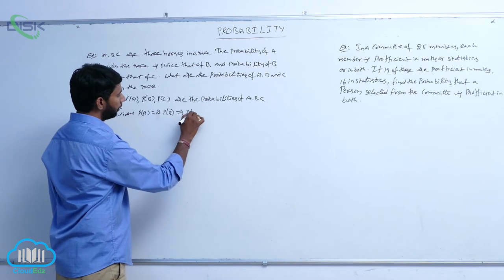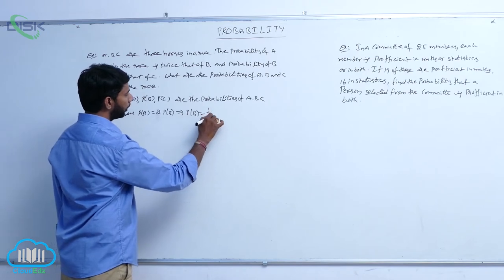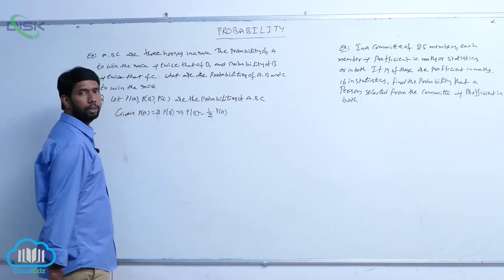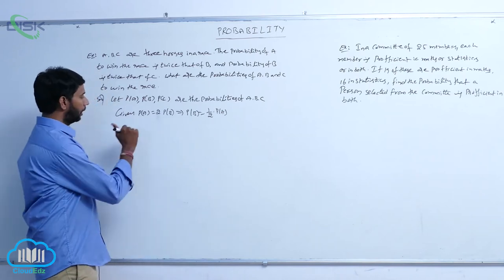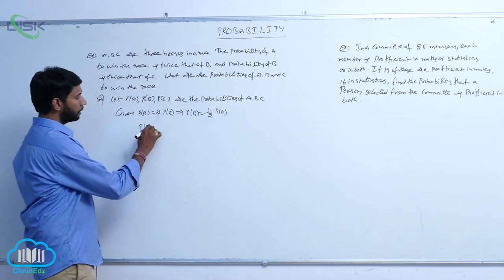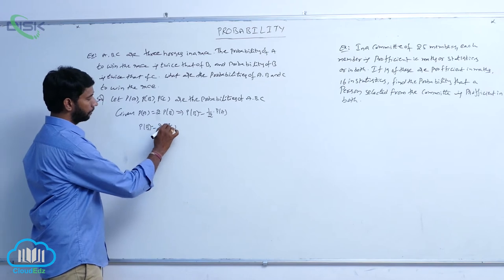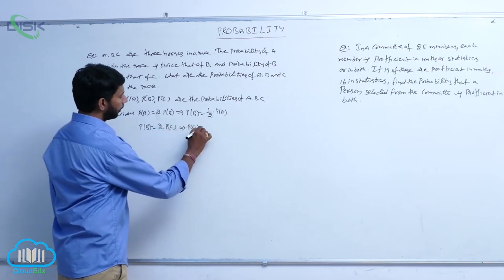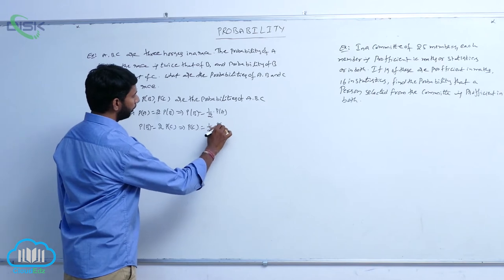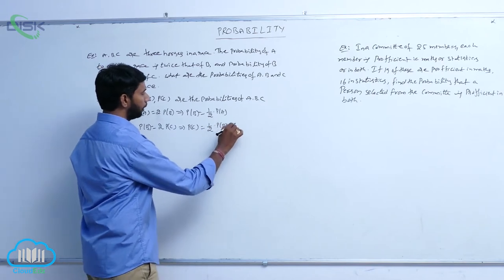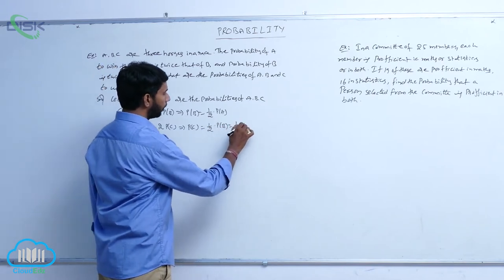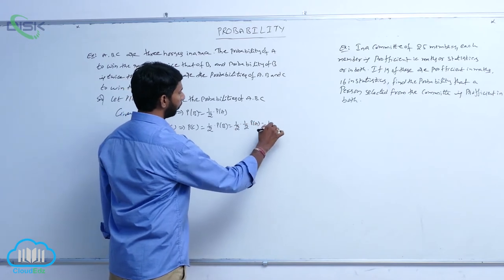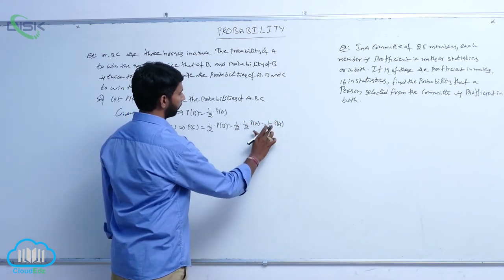It implies P(B) is equal to half of P(A). And since the probability of B is twice the probability of C, that implies P(C) is equal to half of P(B), which equals half of half of P(A), so P(C) equals one-fourth of P(A).